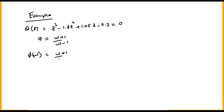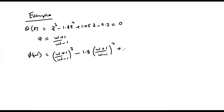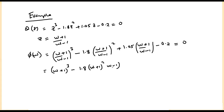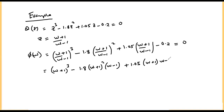Our polynomial in w becomes: ((w+1)/(w-1))^3 minus 1.8 times ((w+1)/(w-1))^2 plus 1.05 times (w+1)/(w-1) minus 0.2 times (w-1)^3 equals zero. Upon expansion, this yields 0.05 w cubed plus 0.75 w squared plus 3.15 w plus 4.05 equals zero.